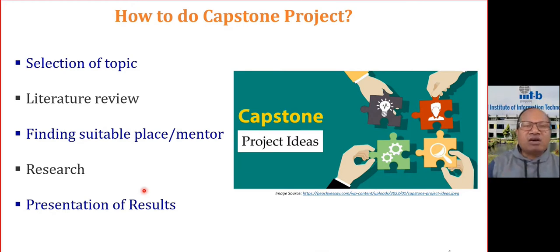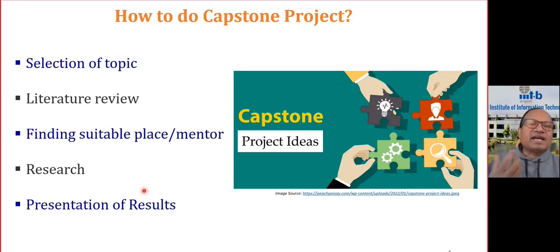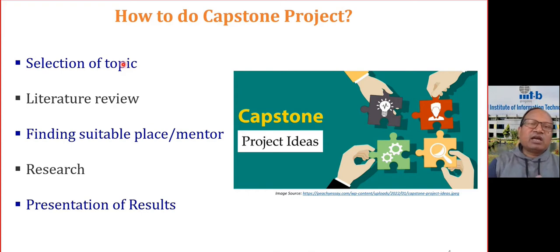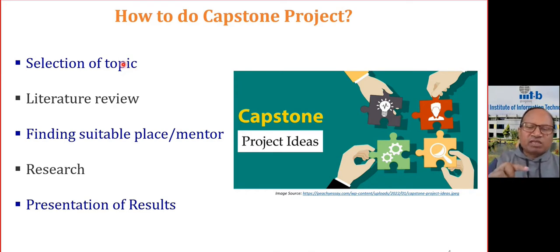Now, the most important thing is how to do the capstone project. The first question that comes once we decide to do a capstone project is the selection of topic — how to choose a topic, how to select a topic. You will always develop some interest after studying, after doing some courses. Some interest would be created in you: I want to do something on IoT, I want to do something on healthcare, I want to do something on AI or AI-based solutions, something on edge computing. So whatever is your interest, you have to choose a topic. But choosing a topic is not an easy task.